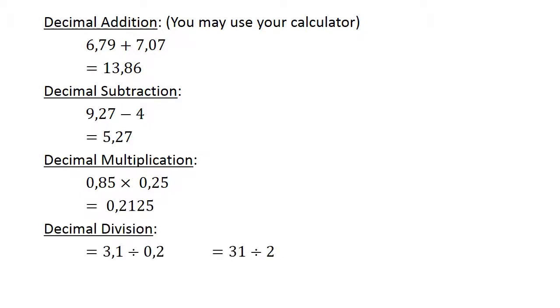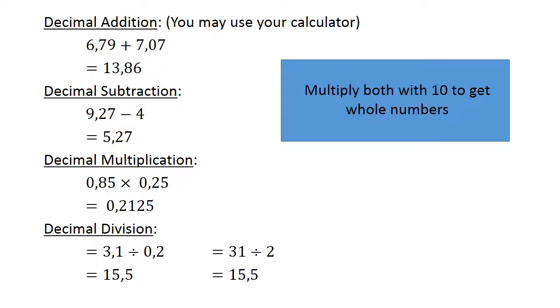Decimal division: 3.1 divided by 0.2. Multiply both by 10 to get whole numbers. 31 divided by 2 equals 15.5.